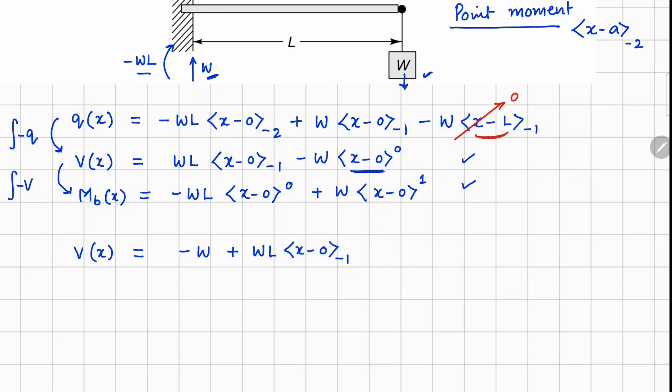Now this right here is your unit impulse function, so this is going to be nonzero only at x equals 0. Everywhere else, your value is going to be constant minus W.